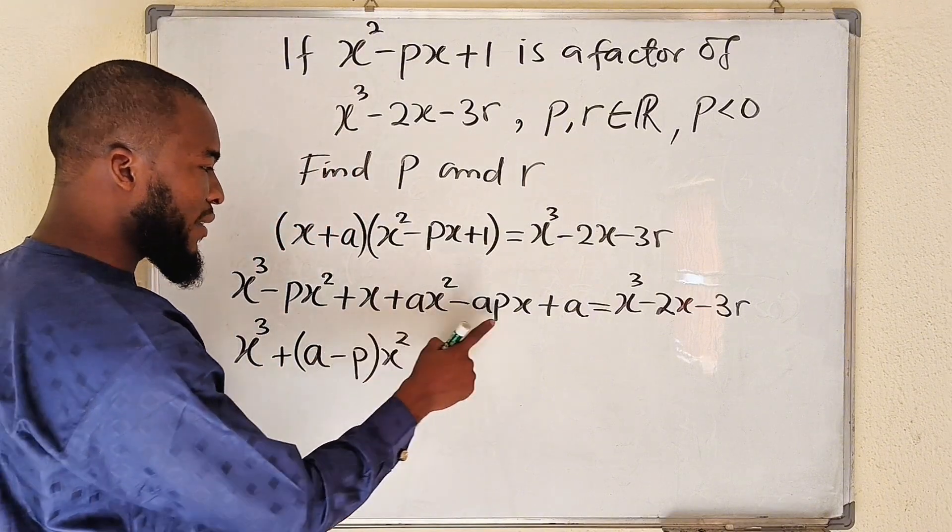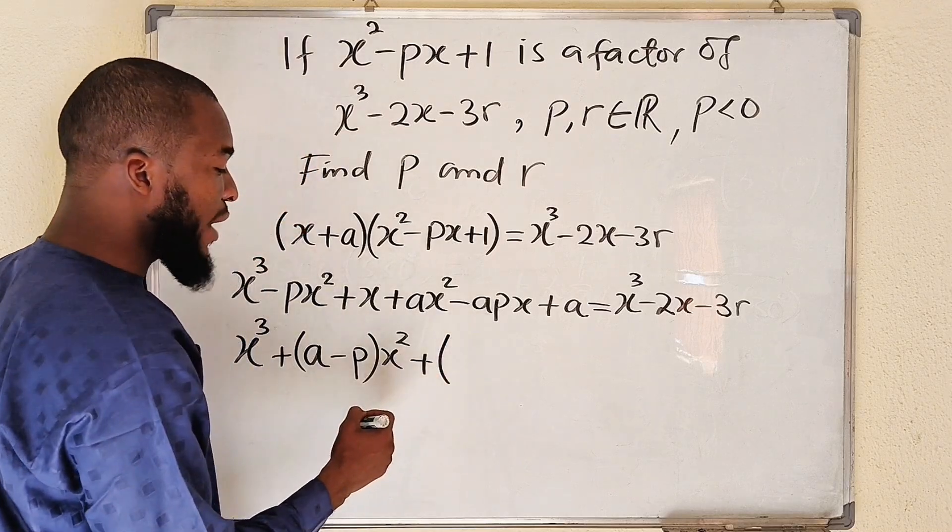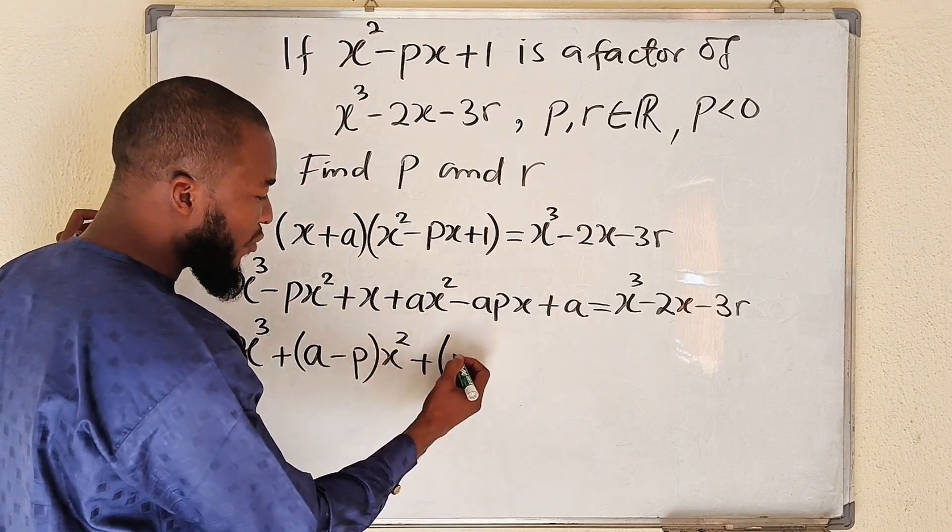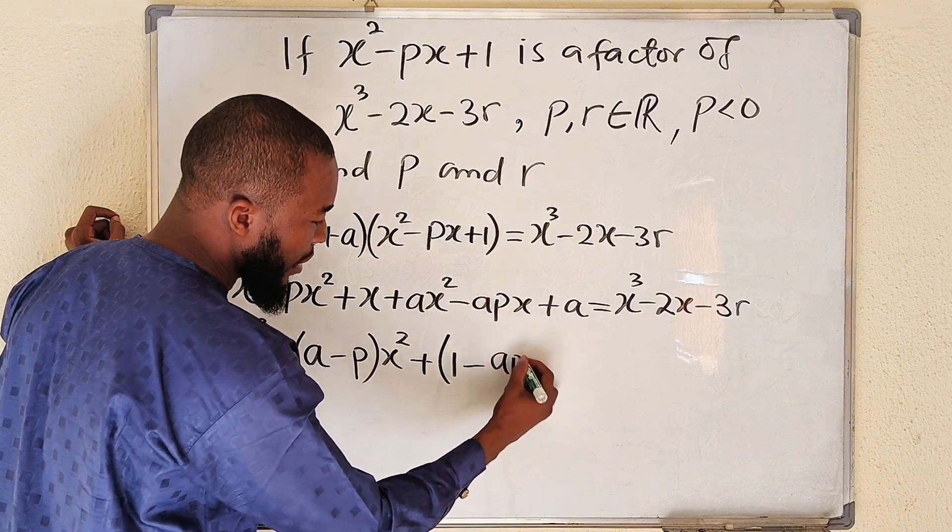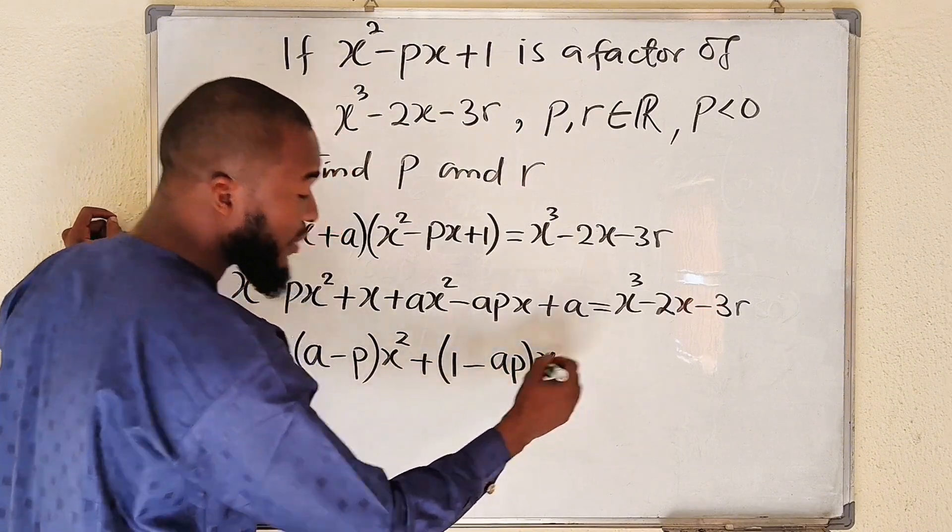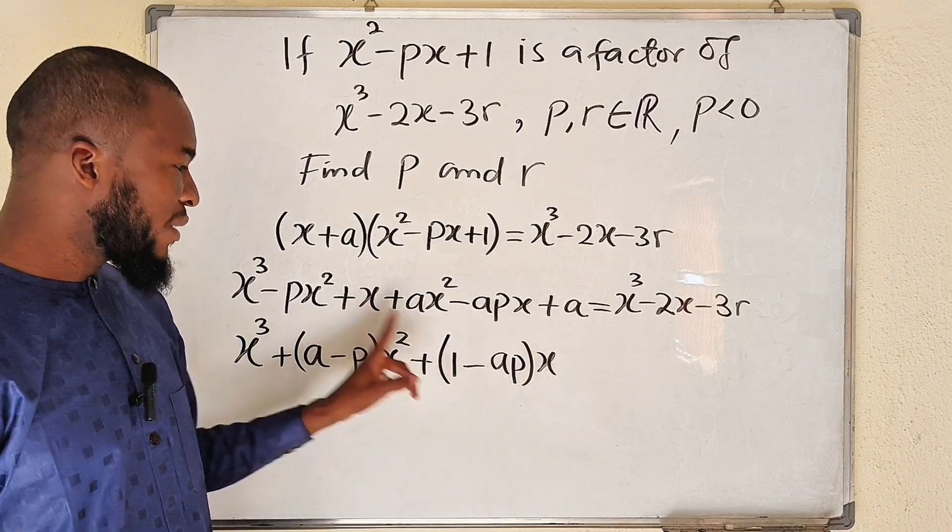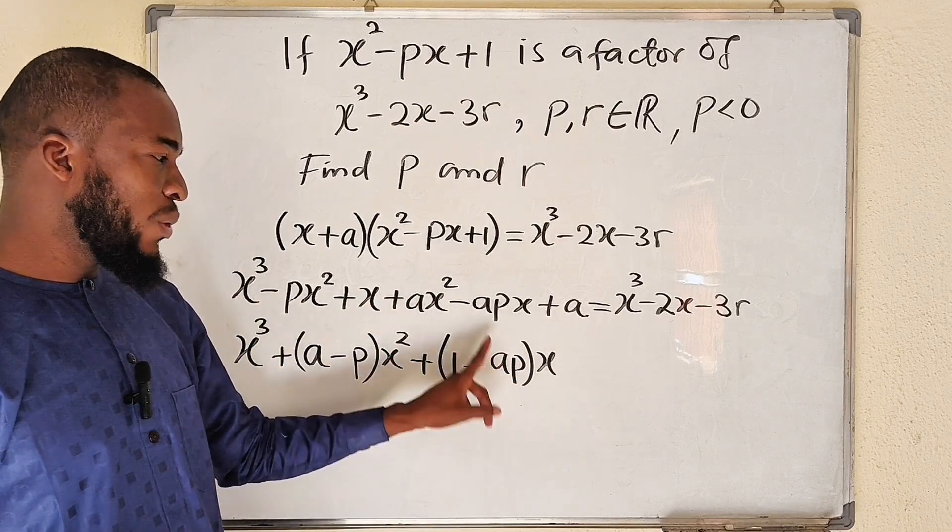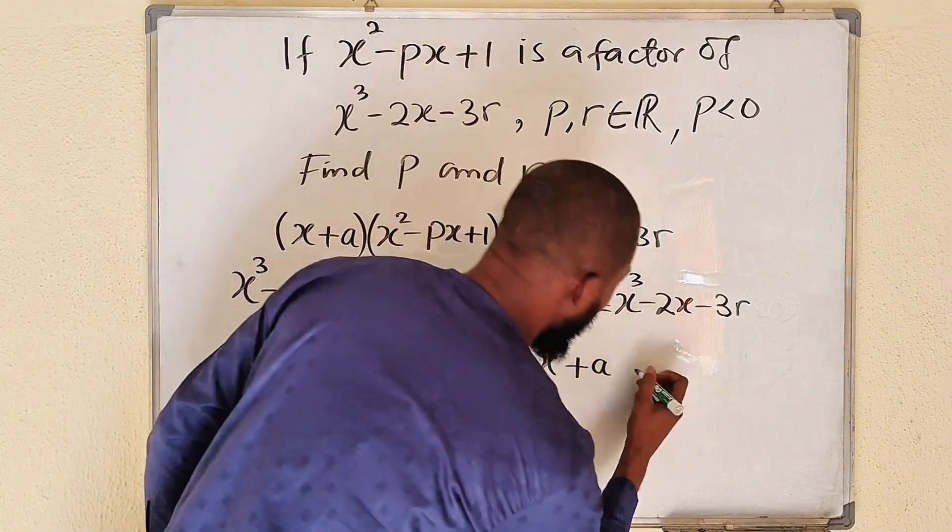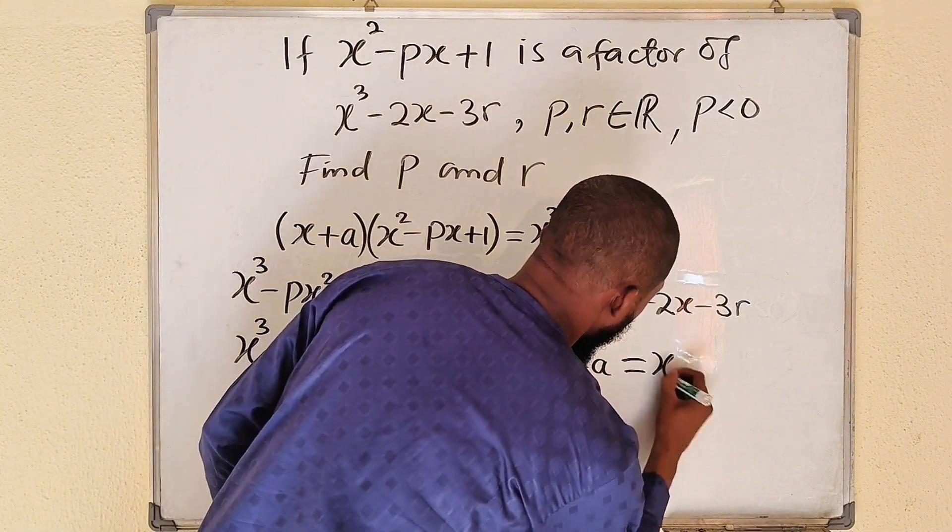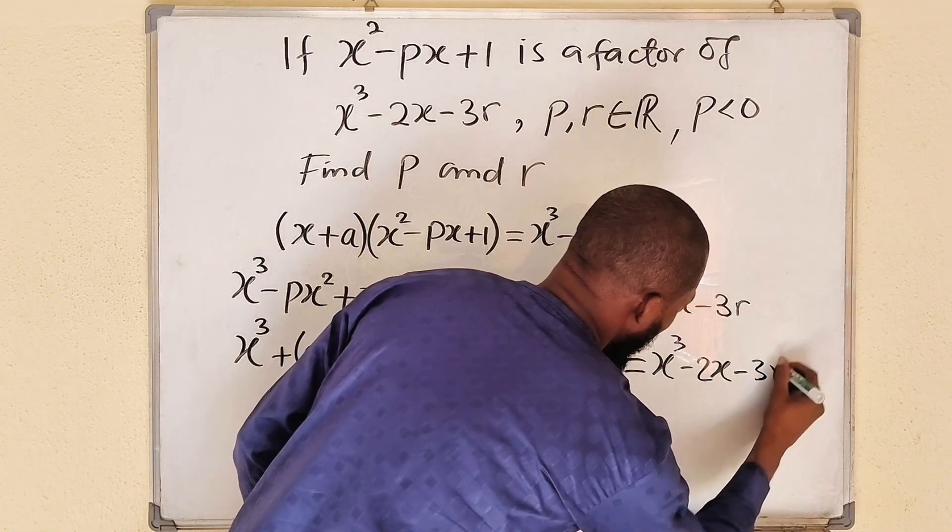Let me factor out x. So here I have 1 minus ap. Then outside we have x. If you expand, x times 1 will give us x, x times negative ap will give us negative apx. Then we still have a constant. This is equal to x cubed minus 2x minus 3r.